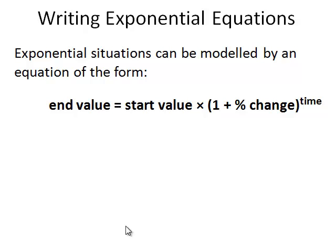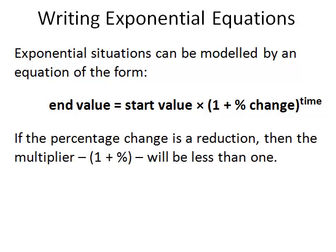This is our method. We know that end value is start value times the 100% plus whatever change it is to the power of time. If the change over time is a reduction, then this value here will be negative. And that 1 plus percentage will be less than 1.